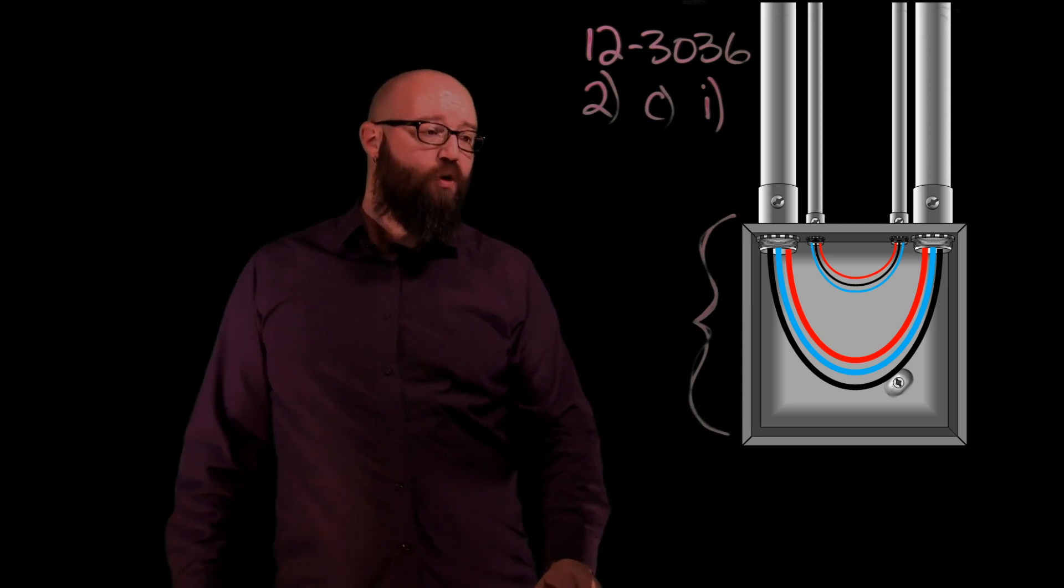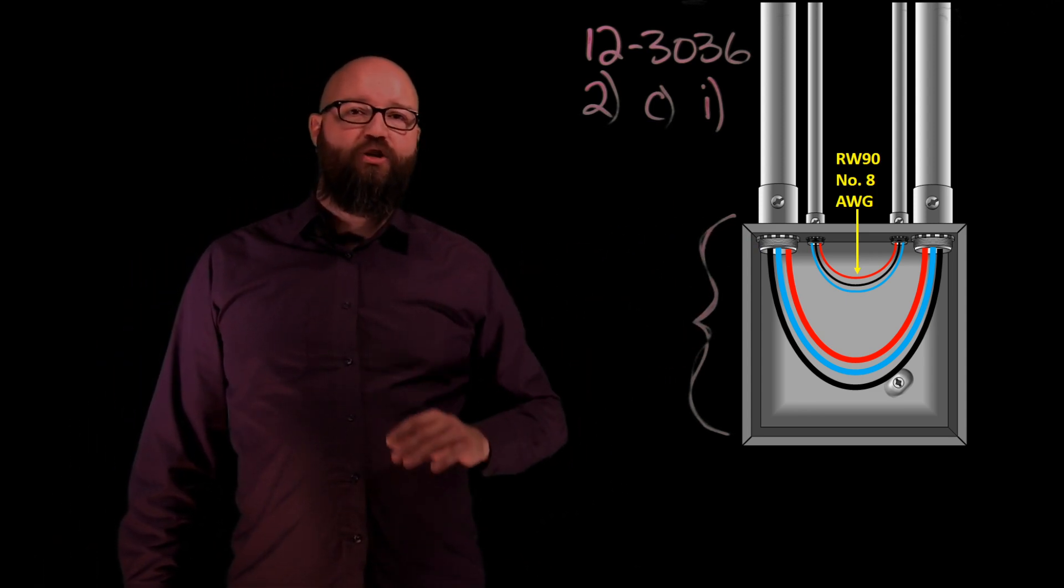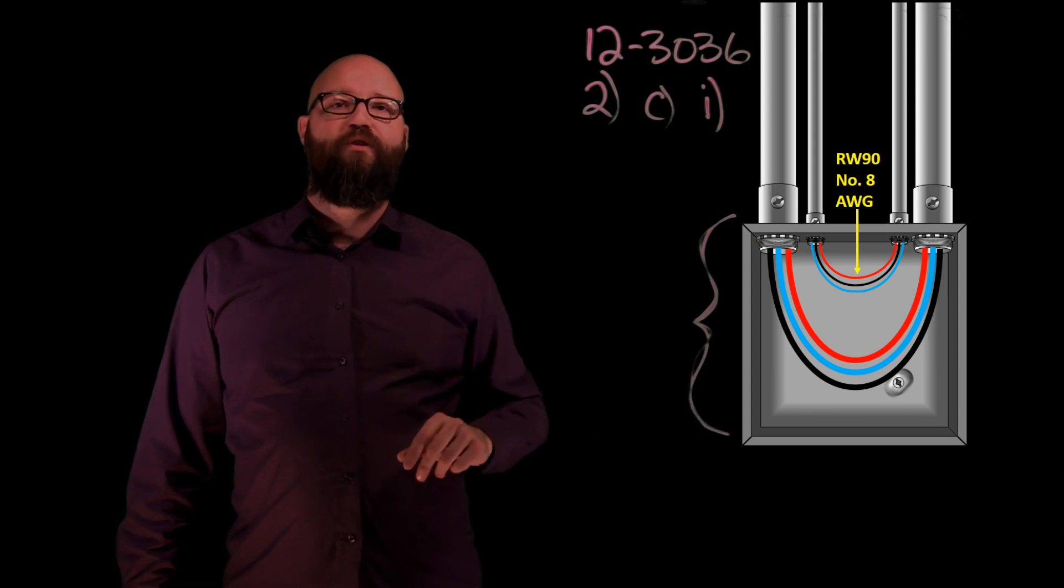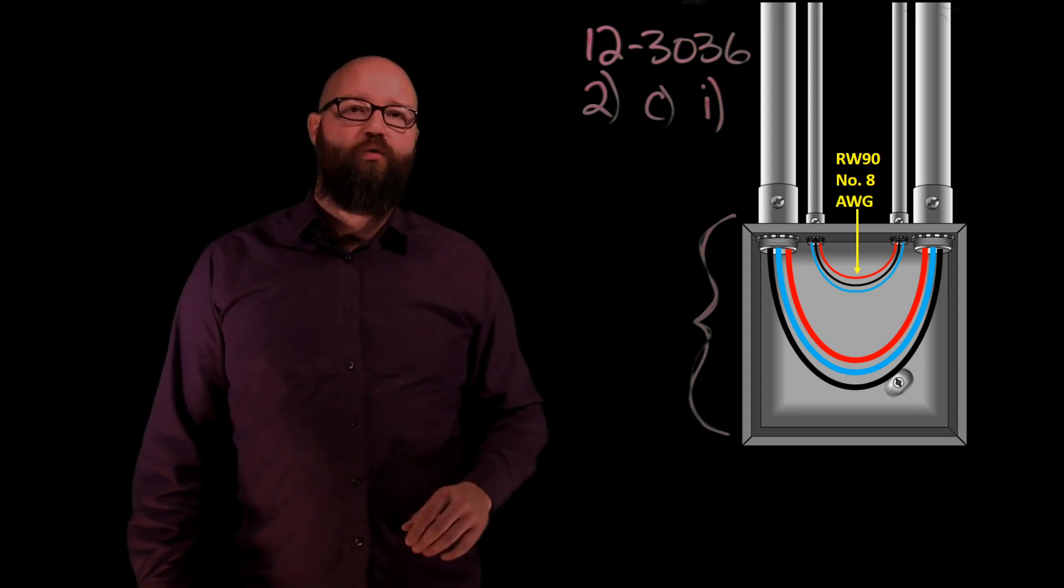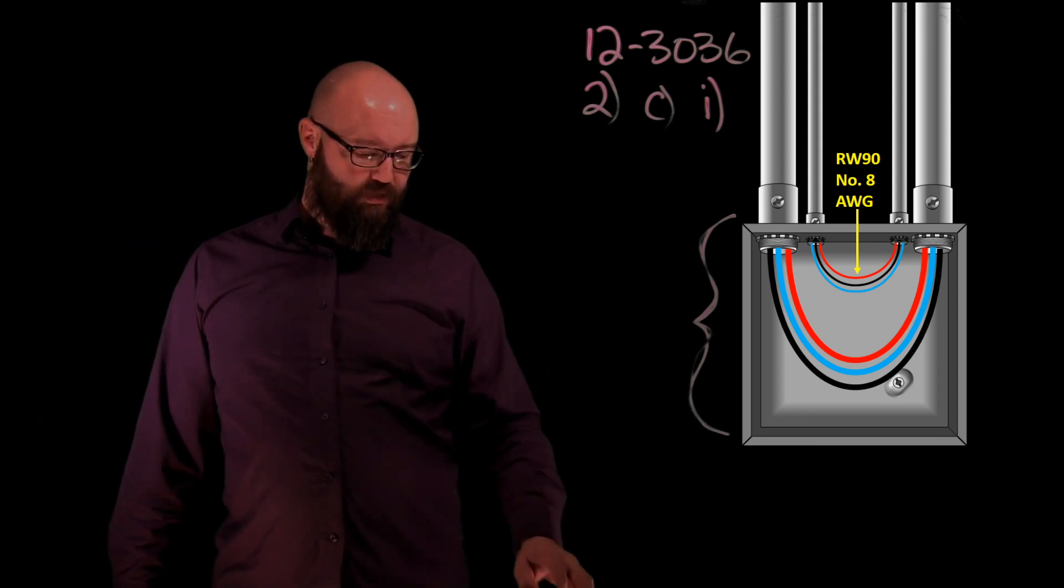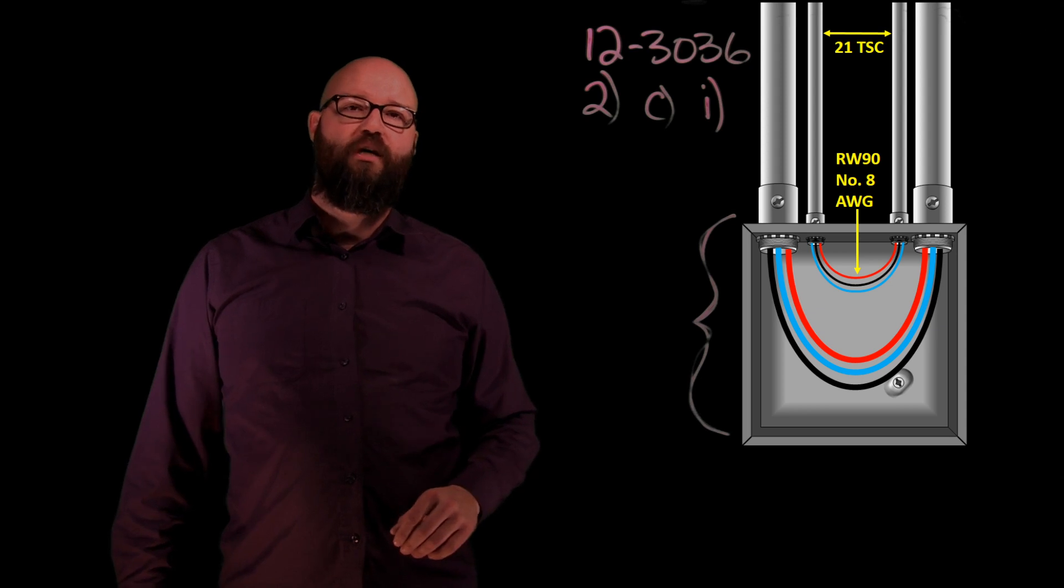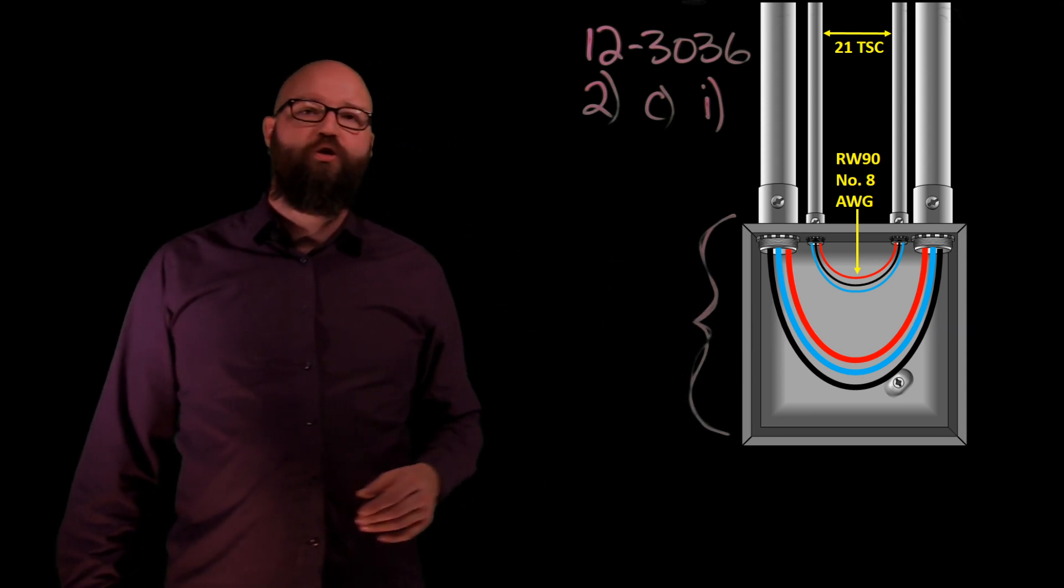I just want to point out our smaller conductors, those are going to be a number eight gauge. Those are dealt with in another rule 12-30-34 so we're not going to concern ourselves with those. But if we were to size the conduit for those, we would take those number eights with our RW90. Table six tells me that we would have a 21 trade size conduit to accommodate those number eights.